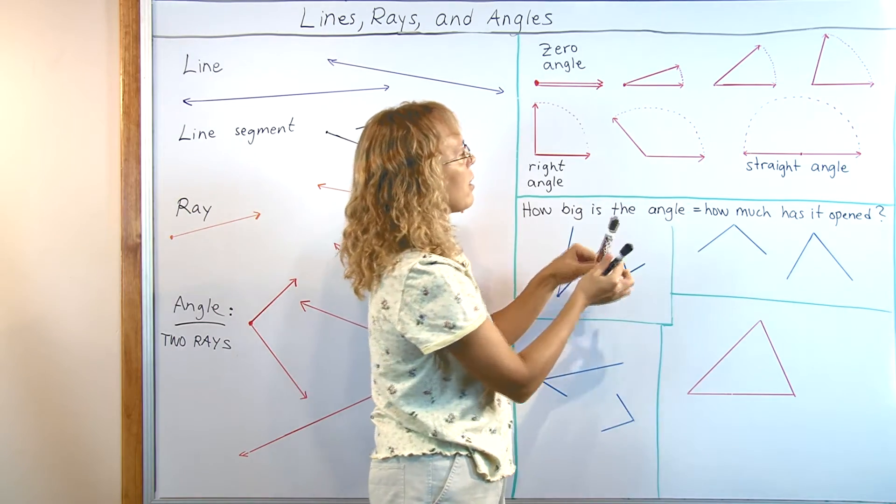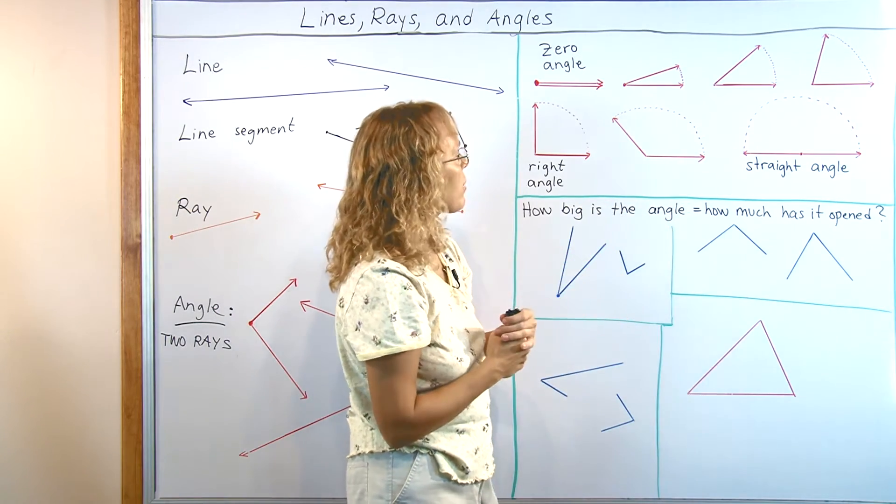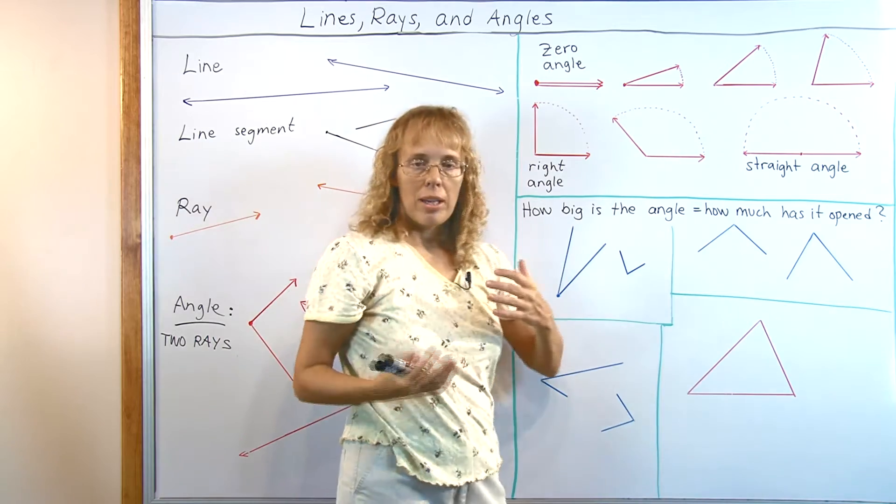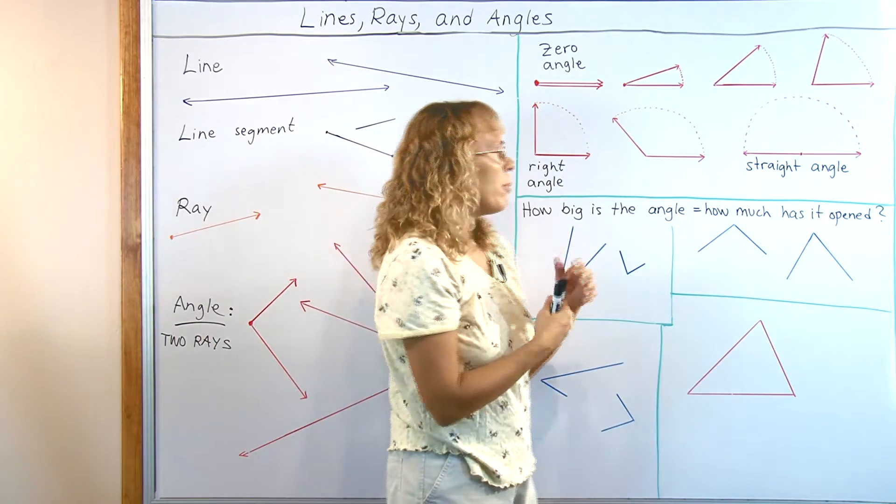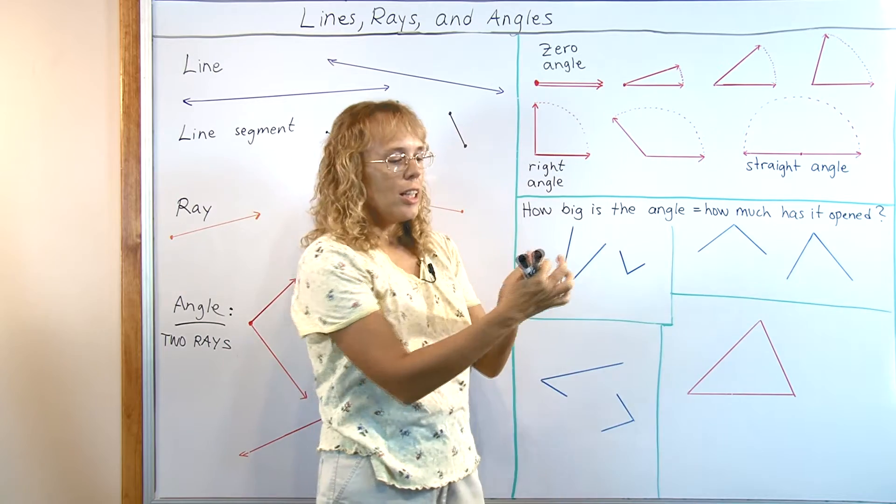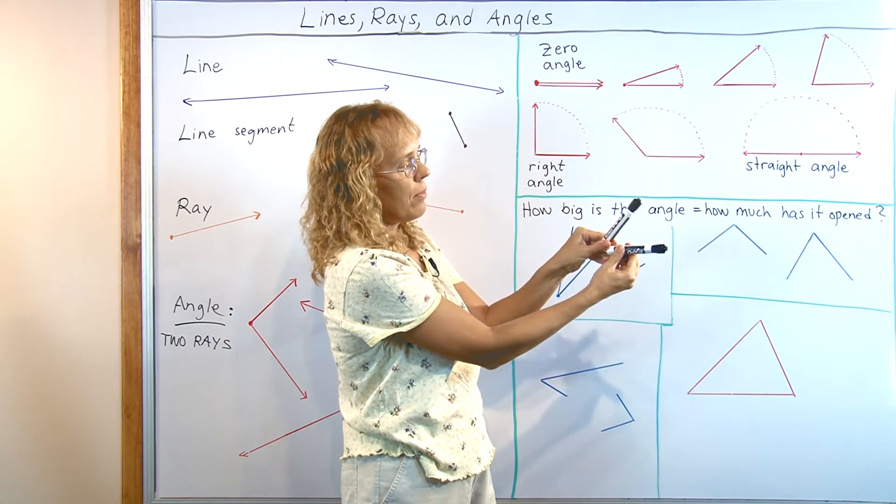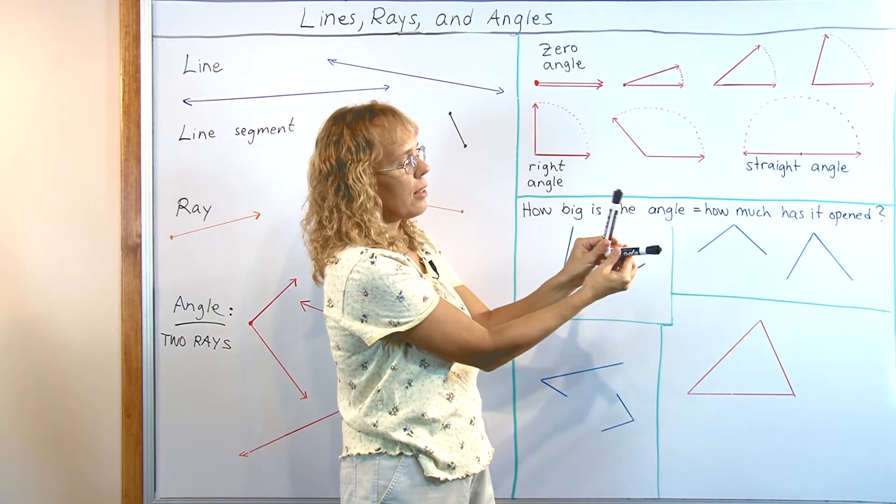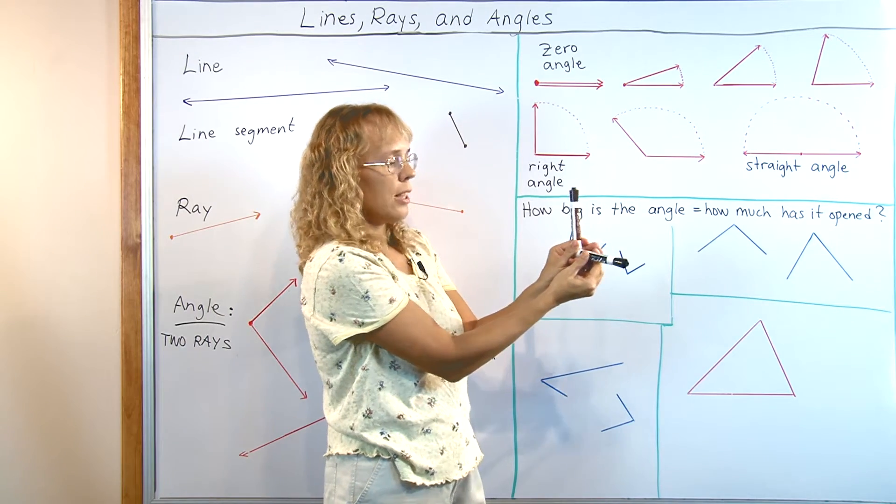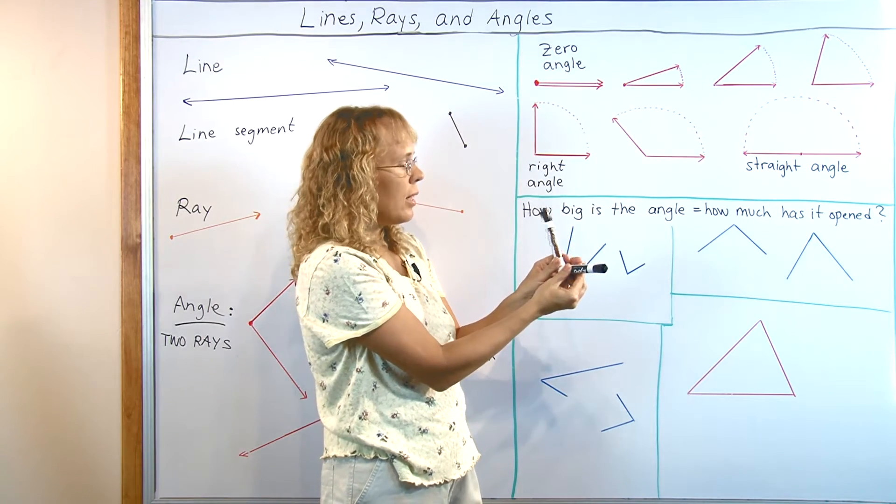And all those would be angles, different size angles. And that is how we actually measure how big an angle is. How big is the angle means how much has it opened. If you start here and you start opening the angle, this ray will move up like this. How much does it open is how big it is.